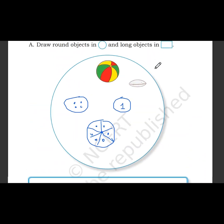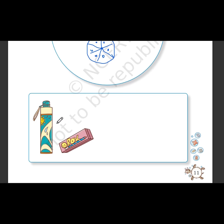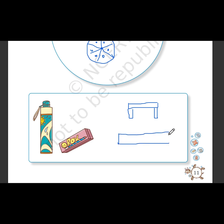Now I am going to draw the long objects. I will use some vegetables. Let's draw a long object — yes, it is a table. And this is a scale. And here is a blackboard.